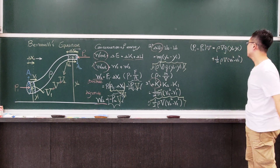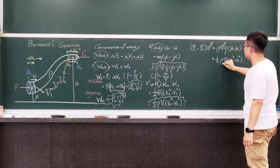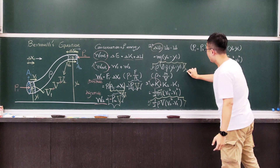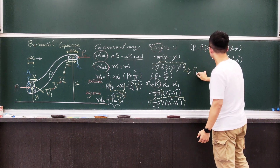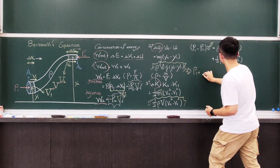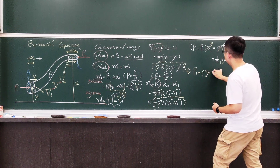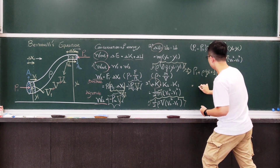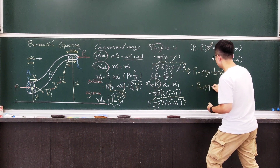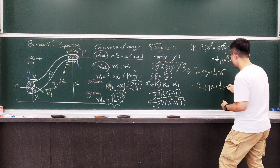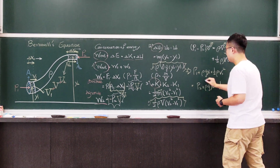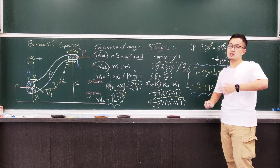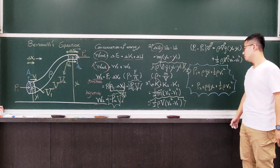Looking at this equation, you can see they all have the V term, so V can be cancelled. Rearranging finally gives us: P1 plus rho*g*y1 plus one-half rho*v1 squared equals P2 plus rho*g*y2 plus one-half rho*v2 squared. This is Bernoulli's equation — one of the most famous equations in the field of fluid dynamics.